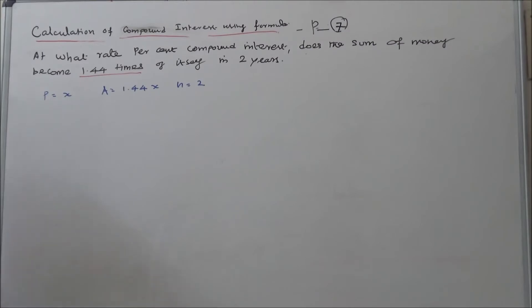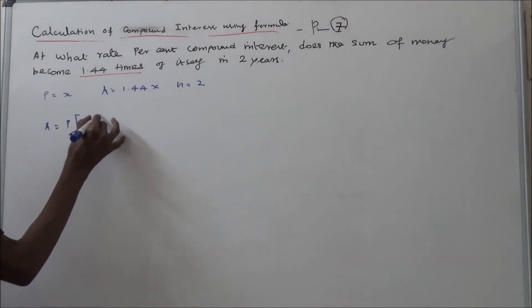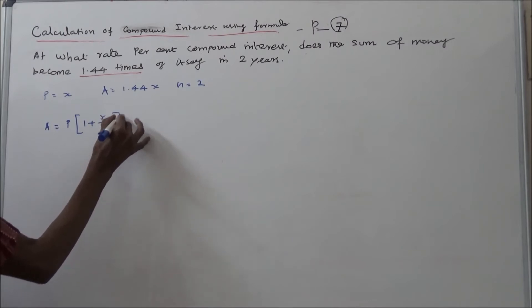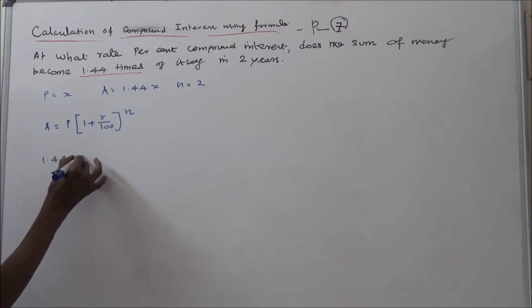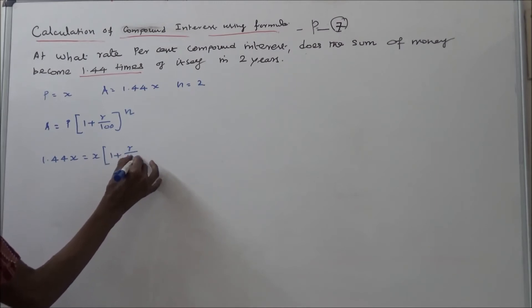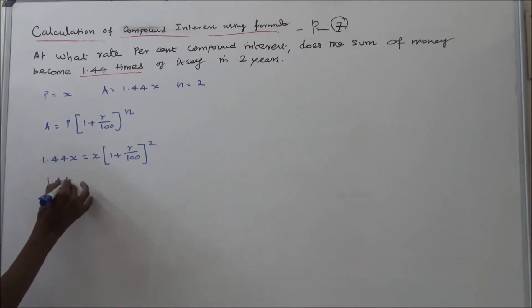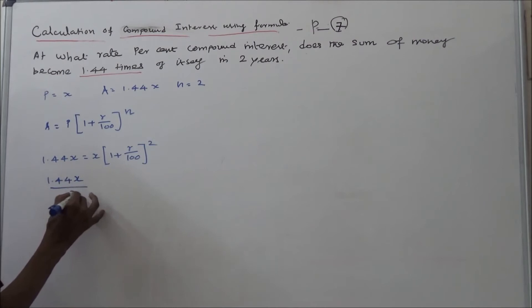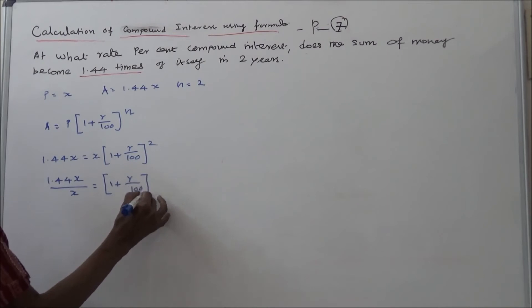We have to calculate the rate of compound interest — the value of R. Using the formula: A is equal to P into 1 plus R by 100 to the power N. Substituting: 1.44X is equal to X into 1 plus R by 100 to the power 2. Dividing both sides by X: 1.44 is equal to 1 plus R by 100 to the power 2.